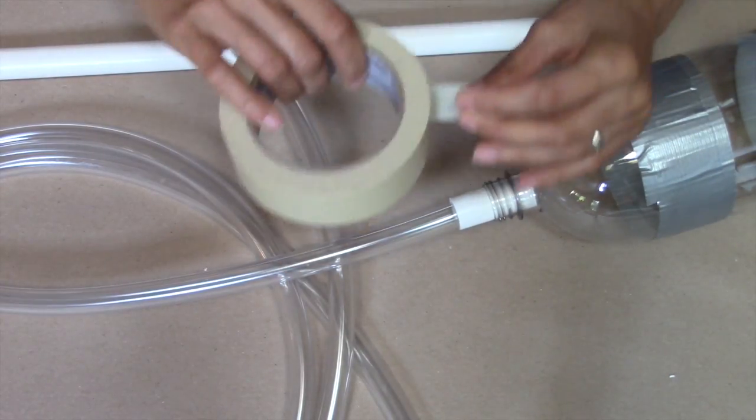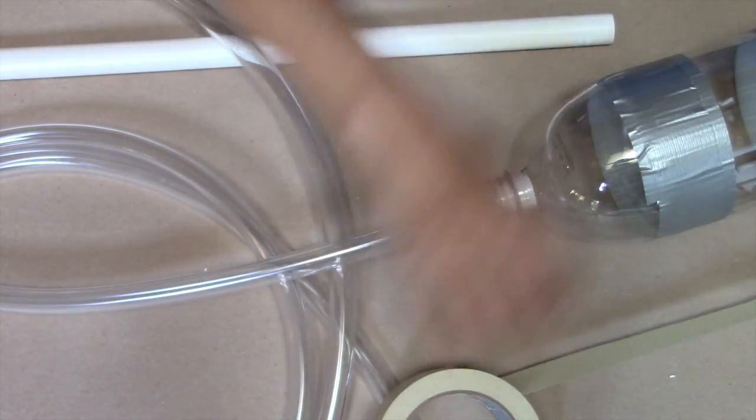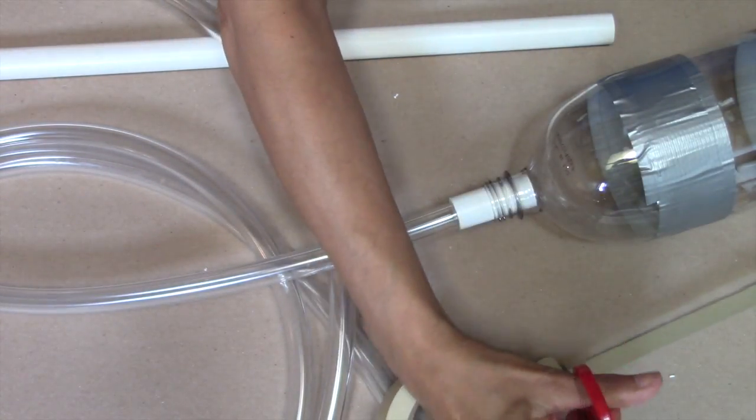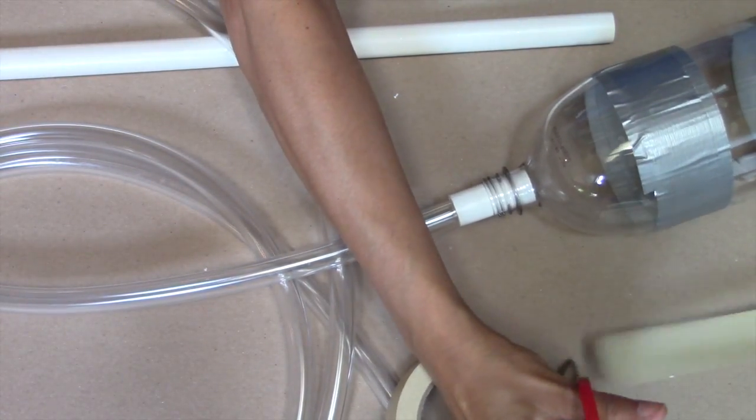Now wrap a piece of wide masking tape around the ends, making sure to completely seal the edges of the bottle and pipe to the tubing with no air gaps.